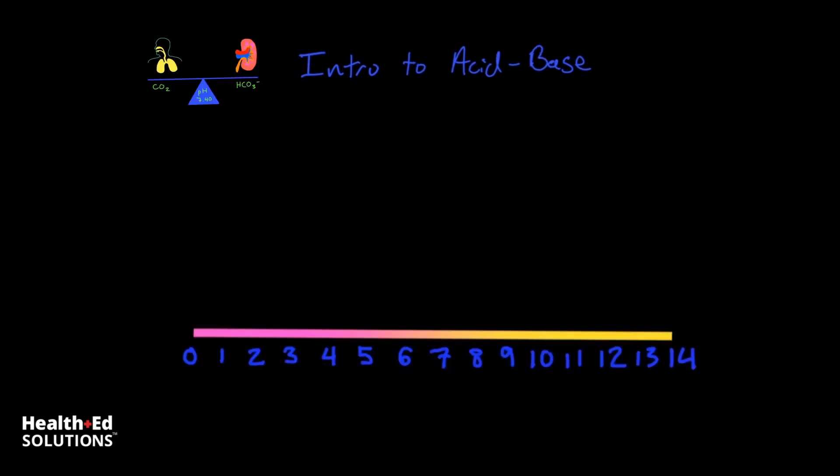The first thing that you need to know about acid base and interpreting ABGs is that acidity is measured on a scale that corresponds to the inverse of hydrogen ion concentration. So a zero means that there are 10 to the 14th power of hydrogen ions concentrated in the solution, whereas a pH of 14 would just mean that there is 10 to the first power. And that's measured in moles per liter.